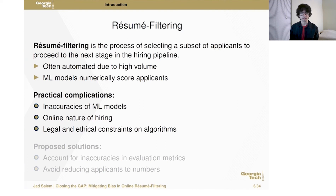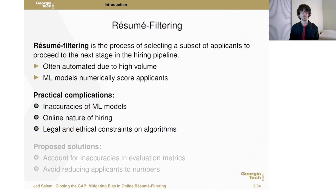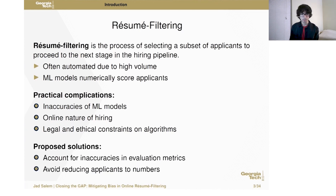There are some practical complications with this problem. First, any machine learning model will be inaccurate in some way, and these inaccuracies can be problematic. Another complication is the online nature of hiring — you may have to make decisions quickly without seeing the complete applicant pool. Additionally, since this problem affects people's lives, there are legal, ethical, and moral constraints you might want to impose on your algorithms. Broadly speaking, our proposed solutions are to account for these inaccuracies and to avoid reducing applicants to a single number.